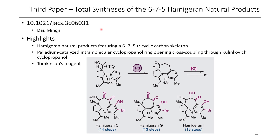The third paper is the total synthesis of the Hamagueran natural products. These natural products have a unique 6-7-5 tricyclic carbon skeleton. A couple of the neat steps we're going to briefly talk about include the palladium-catalyzed intramolecular cyclopropanol ring-opening cross-coupling through a Kulinkovich-based cyclopropanol. The authors also used something called Tomkinson's Reagent, which I thought was really interesting.